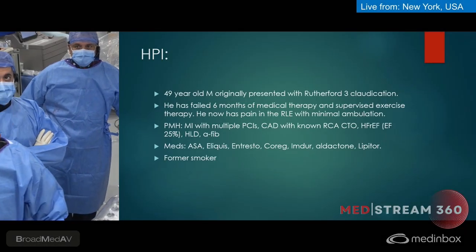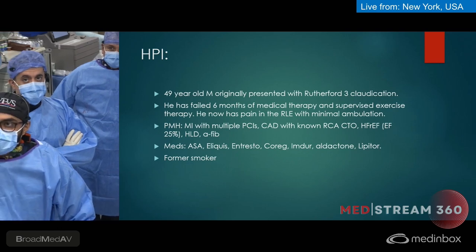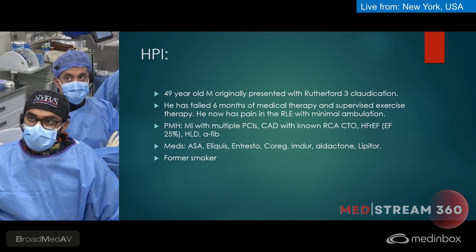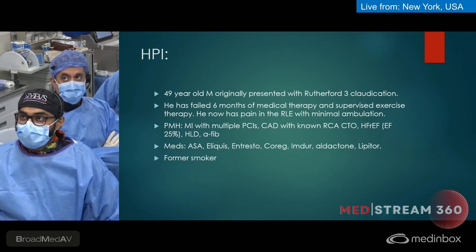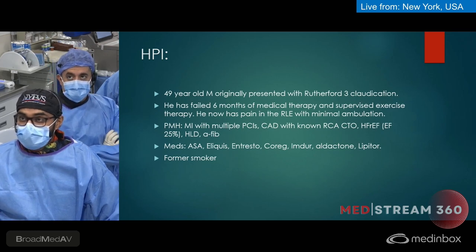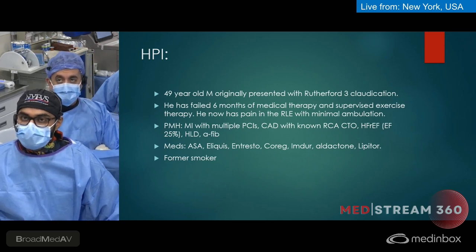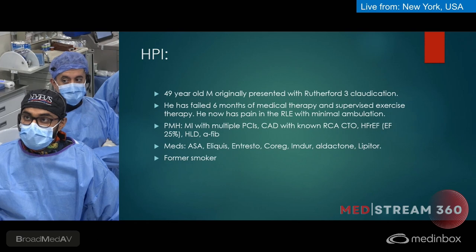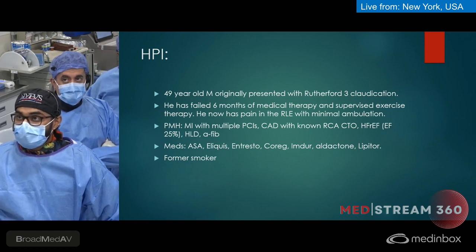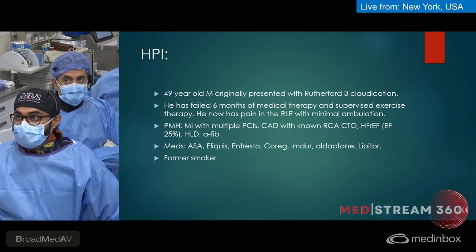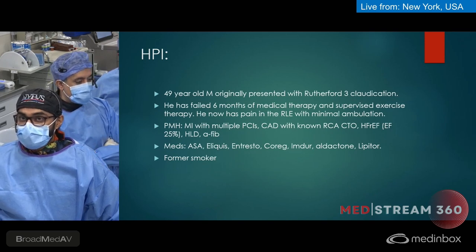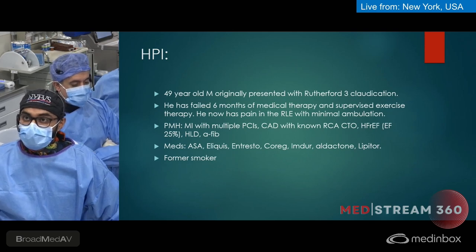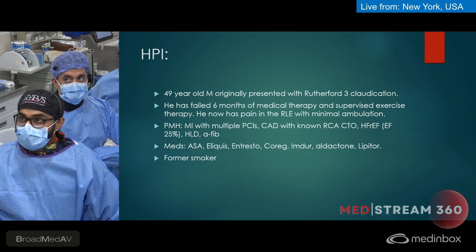We have a 49-year-old male who originally presented with Rutherford 3 claudication over the past six months. He's been on medical therapy, failed supervised exercise therapy, and now has pain after walking less than a block. His past medical history includes MI with multiple stents, CAD, known RCA CTO, heart failure with reduced ejection fraction (EF 25%), old LV thrombus, hyperlipidemia, and AFib. He's on aspirin, Eliquis, Crestor, Imdur, Aldactone, and Lipitor.